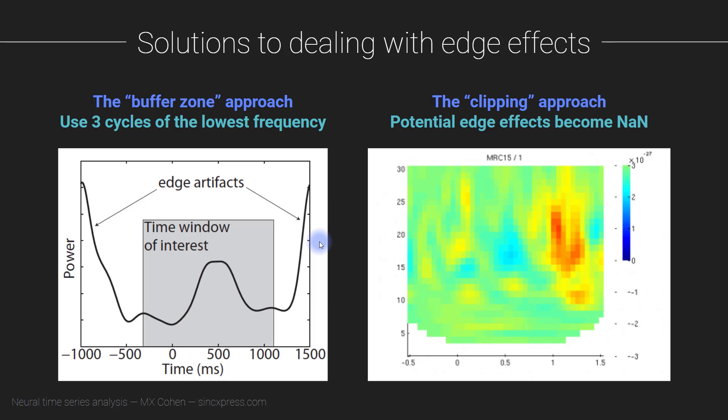So that leads to two solutions, two possible ways of dealing with edge effects. And again, the idea is that you cannot eliminate edge effects. What you can do instead is come up with one of two strategies to make sure that the edge effects are not going to contaminate the part of the signal that you want to interpret.